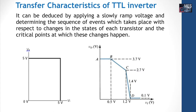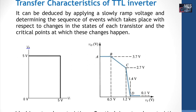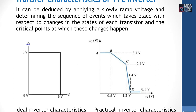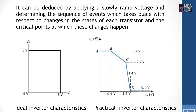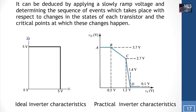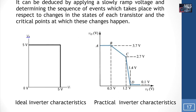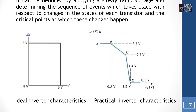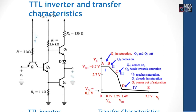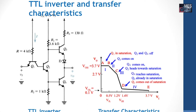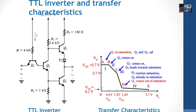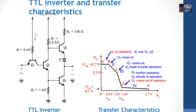Coming to the transfer characteristics of the TTL inverter: transfer characteristics is the input voltage versus output voltage characteristics — how the circuit responds to changes in input voltage. The ideal inverter characteristics show that when input is 0, output is high at 5 volts; when input is 5 volts, output is 0. The figure shows the TTL inverter practical transfer characteristics. When the input is low, current I goes out of the emitter of transistor Q1, Q2 and Q4 get no base current and are OFF, so the output is high — corresponding to point A.